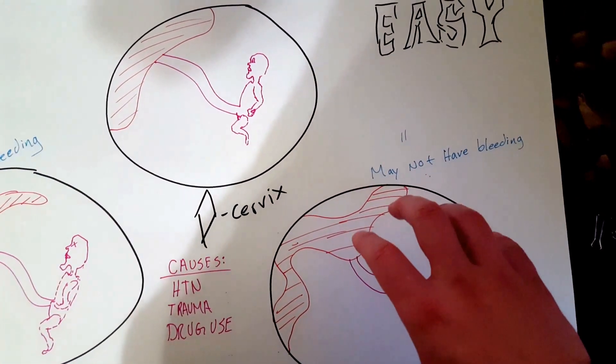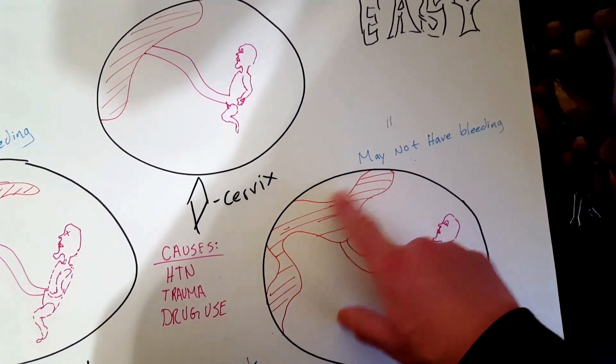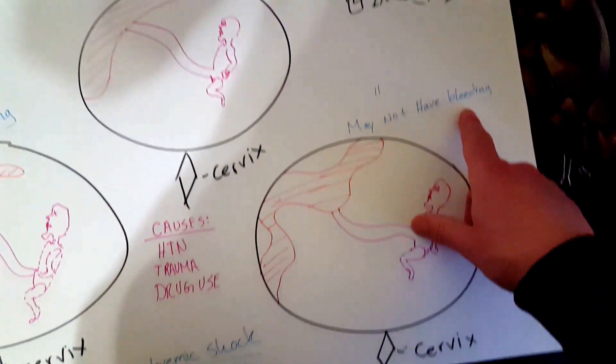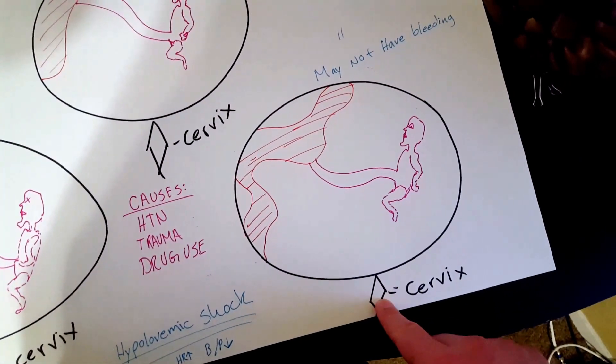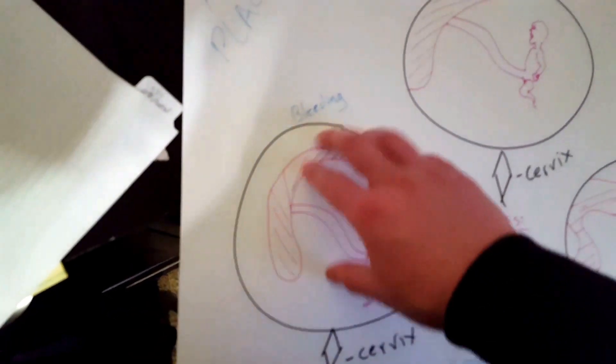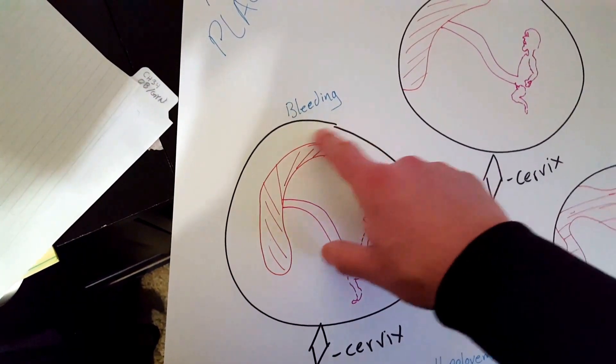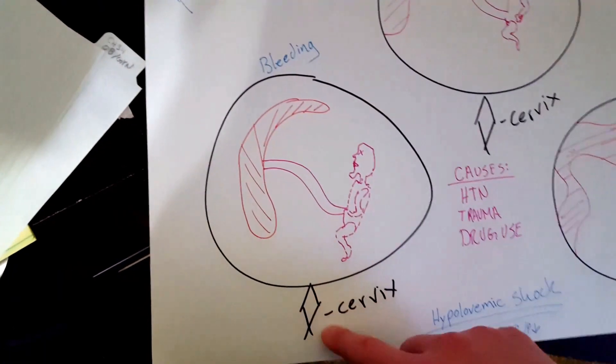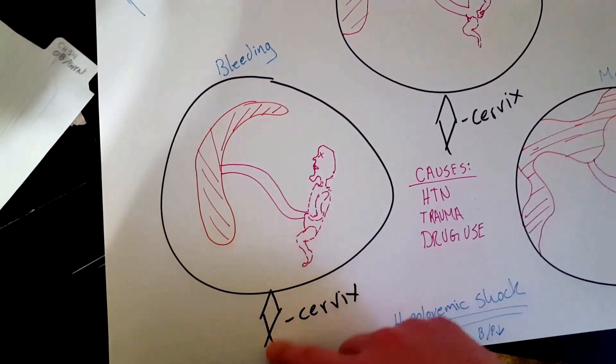So with abruptoplacenta, a partial abruptoplacenta, you may not have any bleeding coming out of the vagina. So you may or may not have vaginal bleeding. However, with a full separation, a full tear, a full abruptoplacenta, you will definitely have bleeding coming out of your patient.